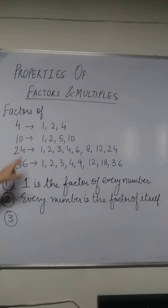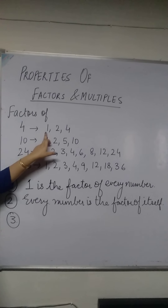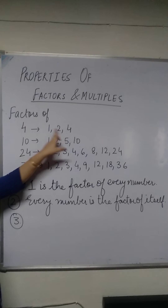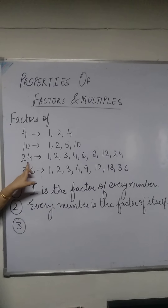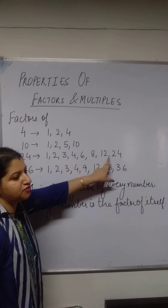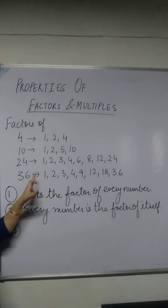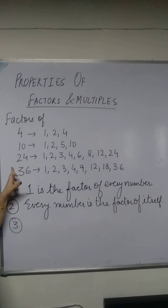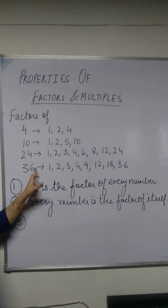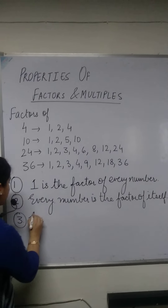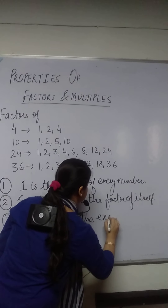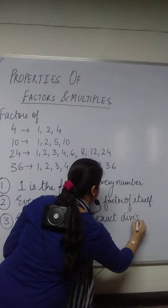Thirdly, if you write the factors of 4: 1, 2, 4 — 1 exactly divides 4, 2 exactly divides 4, and 4 exactly divides 4. Similarly, for the factors of 24: 1, 2, 3, 4, 6, 8, 12, and 24 — all these factors exactly divide 24. We have done the definition of factors also that every factor is an exact divisor of that number. So our third property is: every factor is the exact divisor of the number.